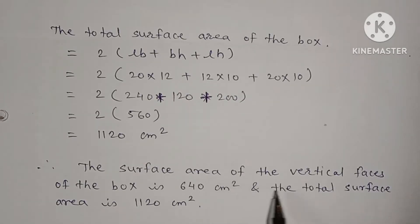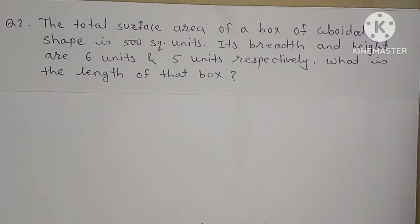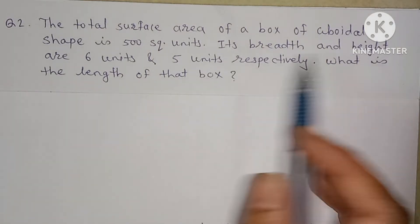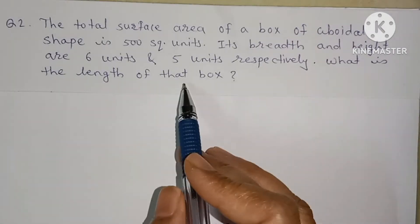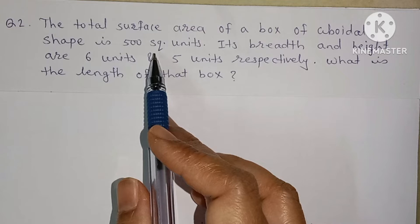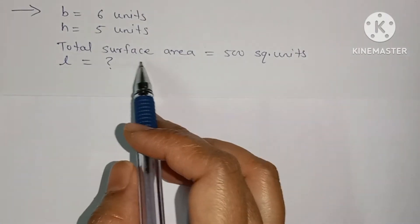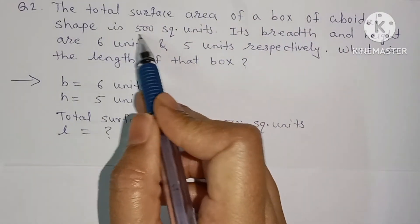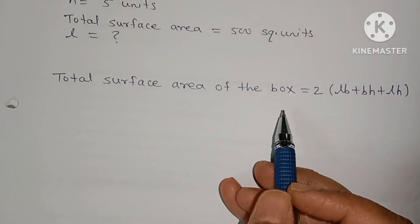Therefore the surface area of the vertical faces of the box is 640 square centimeter and total surface area is 1120 square centimeter. Question number 2: the total surface area of a box of cuboidal shape is 500 square units. Its breadth and height are 6 units and 5 units respectively. Find the length of the box. Given: b = 6 units, h = 5 units, TSA = 500 square units.